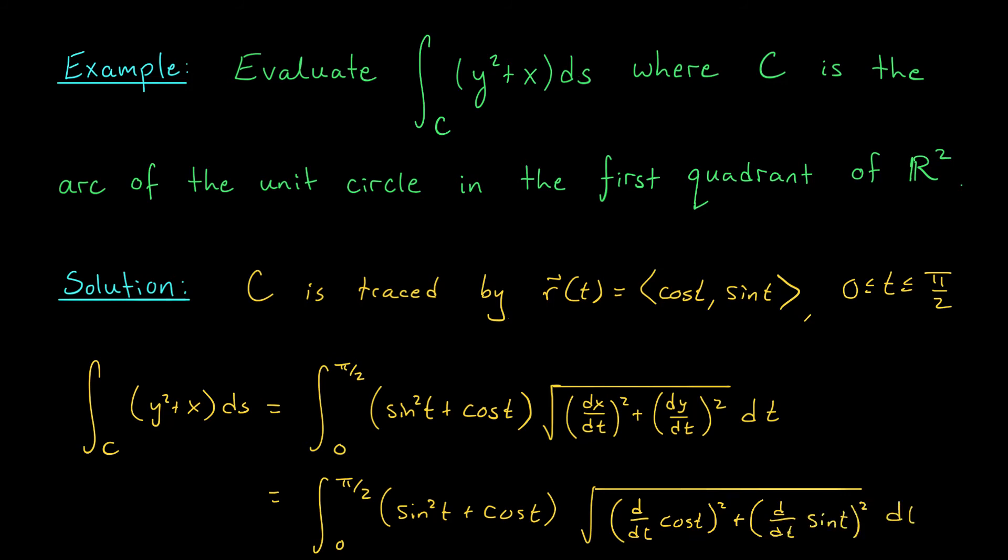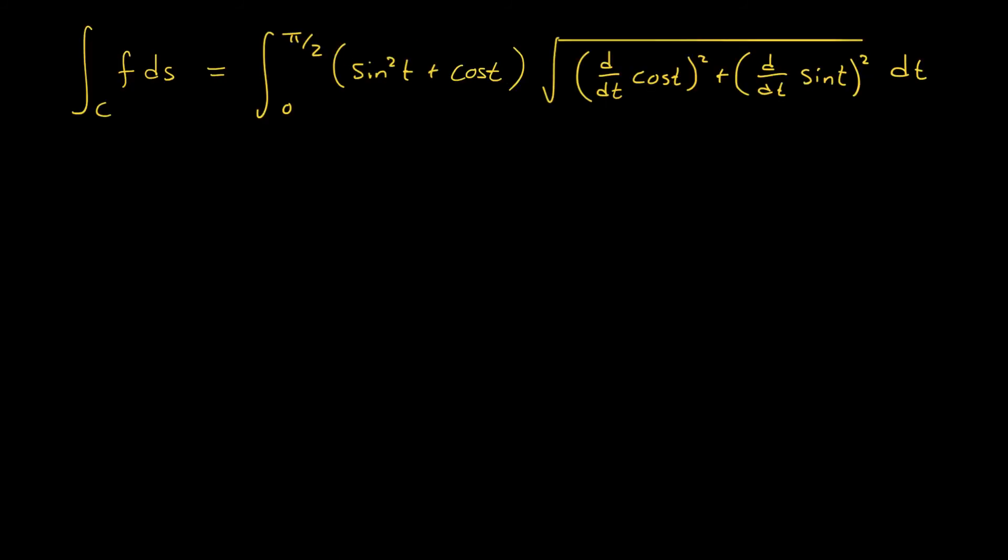On the next slide, we're going to clean this up and evaluate our very first line integral. Here's our formula once again. We need to evaluate our derivatives, clean up our expression, and compute our definite integral. So first of all, the derivative of cos(t) with respect to t is going to be -sin(t). The derivative of sin(t) with respect to t is cos(t). So we have the integral from 0 to π/2 of (sin^2(t) + cos(t)) times the square root of sin^2(t) + cos^2(t). And of course, we know this expression is 1. So this gross square root just disappears. This gives us the integral from 0 to π/2 of (sin^2(t) + cos(t)) dt. Much friendlier.